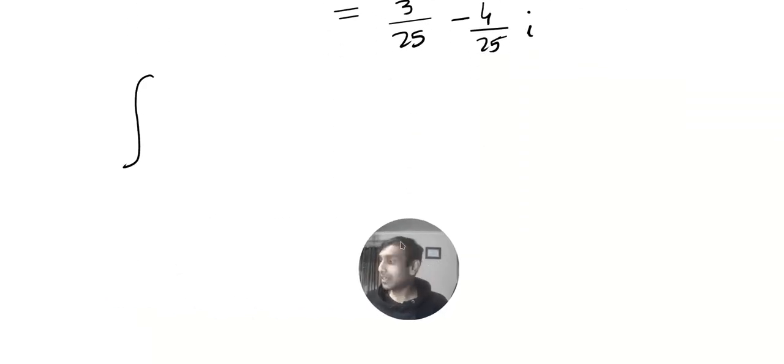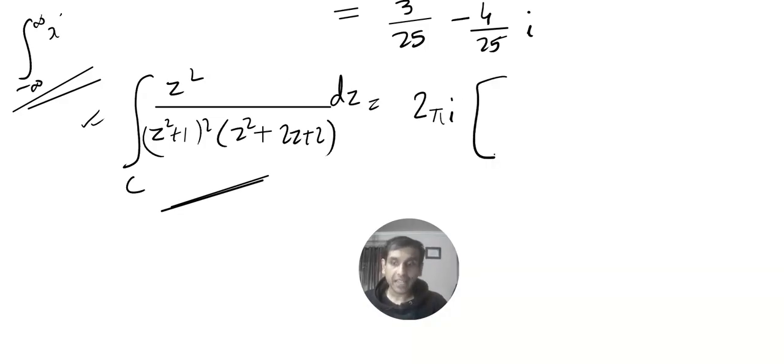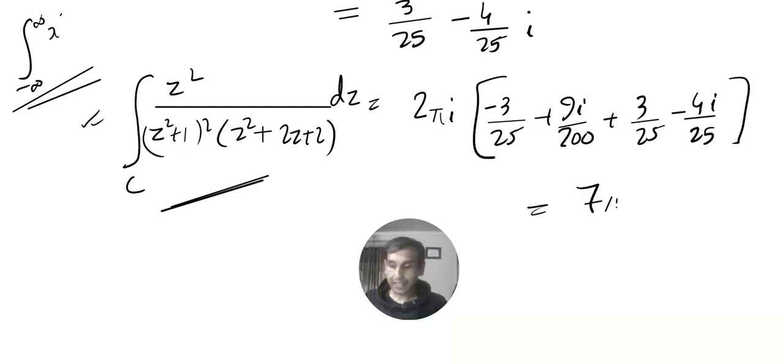Now look at this. Our integral, the integral that we created over C. Once more, this is not the given question. The given question is integral minus infinity to infinity and it is a real integral. This is the integral that we created. And we proved that this value and this value are the same because of Cauchy's Lemma. And you must explain it in your exam. So this will be equal to 2 pi i and sum of the residues above the x axis. So I am going to get 3 by 25 plus 9i by 100 plus 3 by 25 minus 4i by 25.